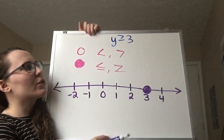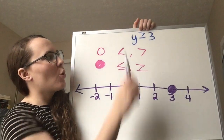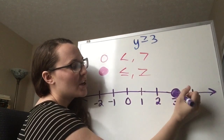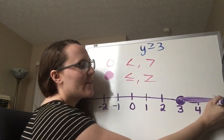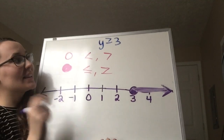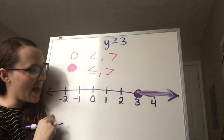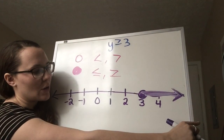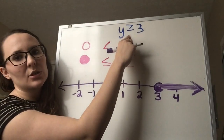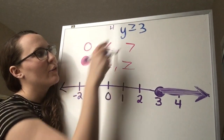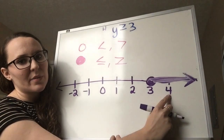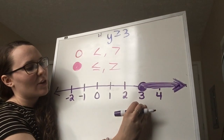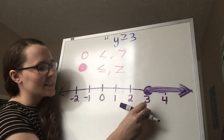Back to our example: y is greater than or equal to 3. The last step is shading. If your sign is greater than or equal to, or greater than, you shade to the right. Make it really obvious. If it's less than or equal to, you shade to the left. You could also think: what's a possible solution? 4 is greater than or equal to 3, so 4 is a solution — and 4 is to the right of 3. Shade in the direction of your solutions.